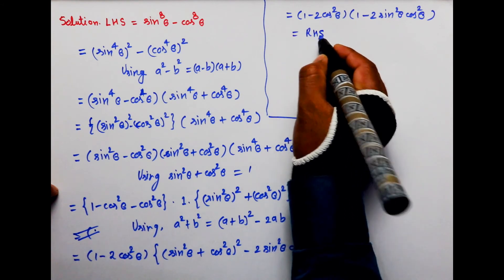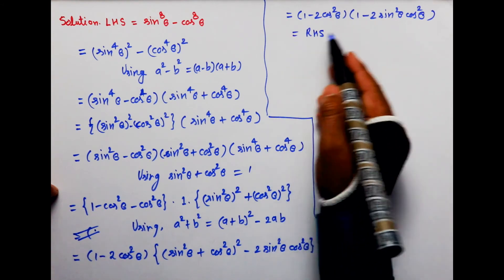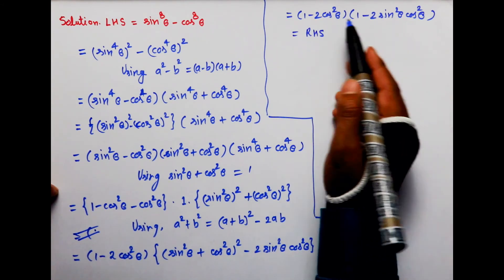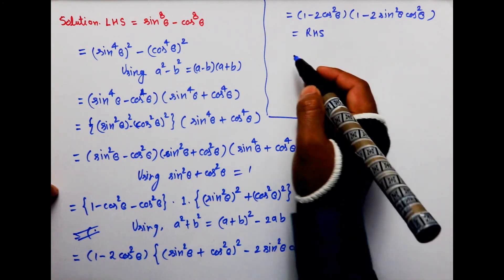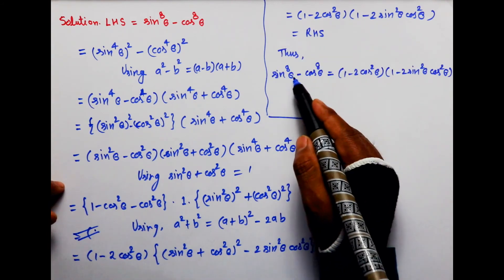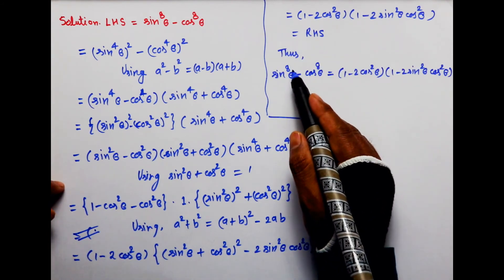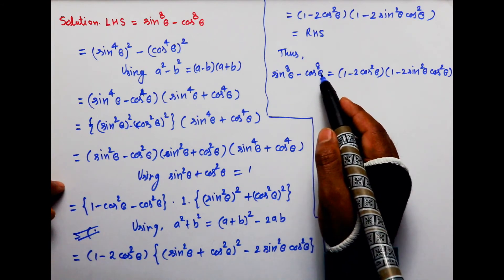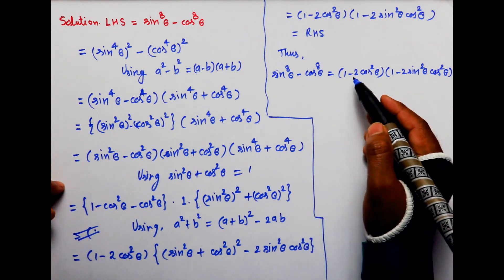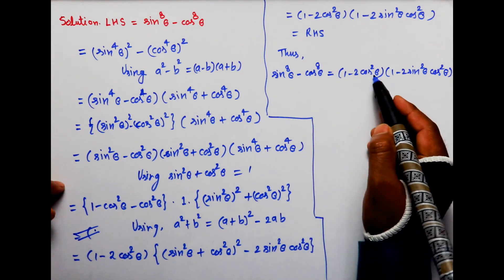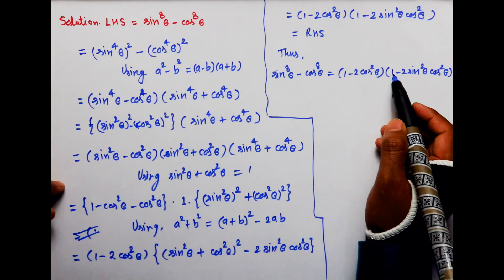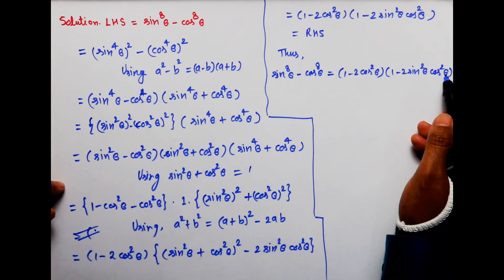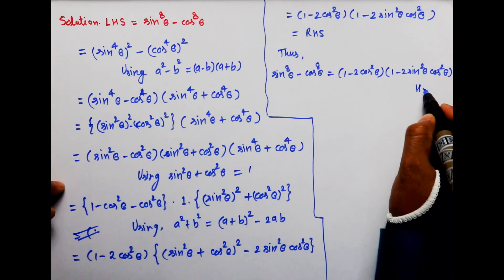Is equal to RHS. Yeh bachyo aapko show karna tha — RHS mein yahi expression likha hua hai. Thus, sin theta to the power 8 minus cos theta to the power 8 is equal to (1 minus 2 cos square theta)(1 minus 2 sin square theta cos square theta). Hence proved.